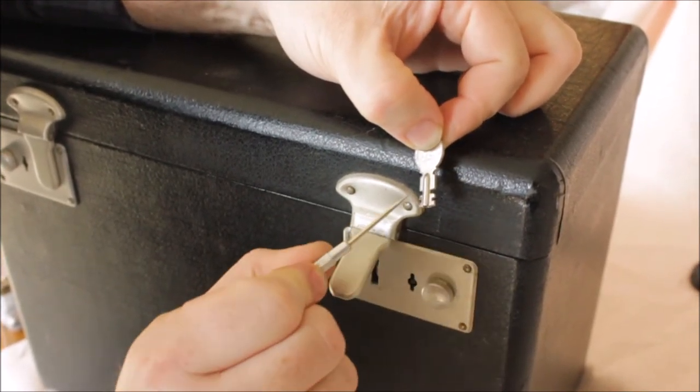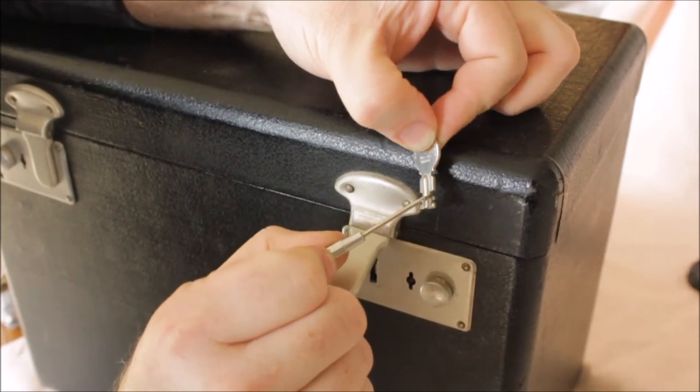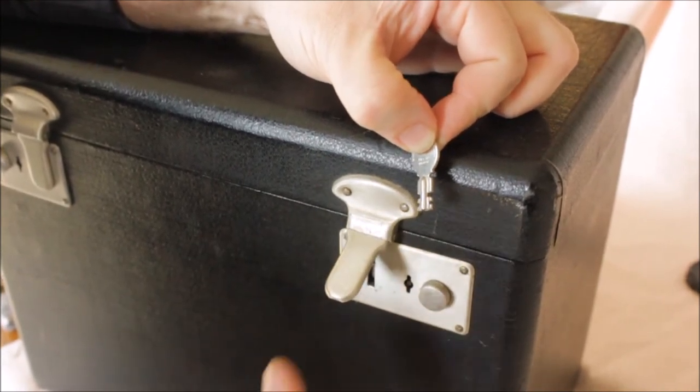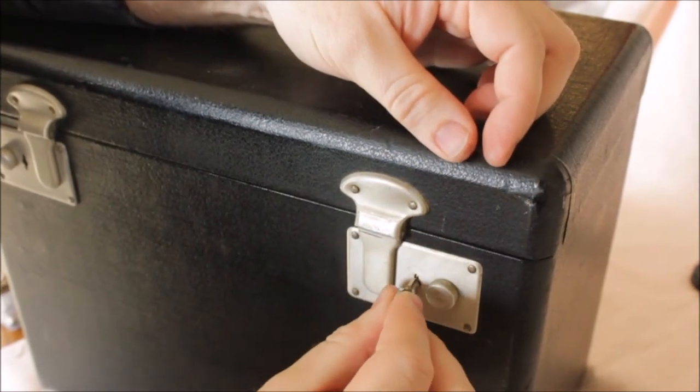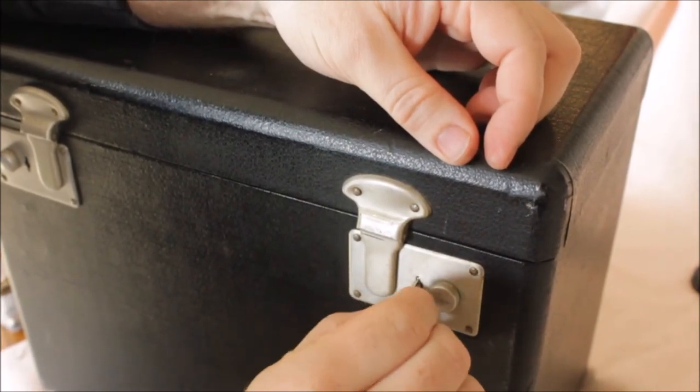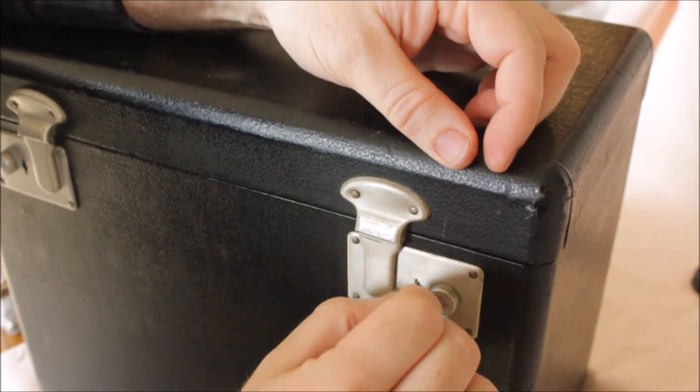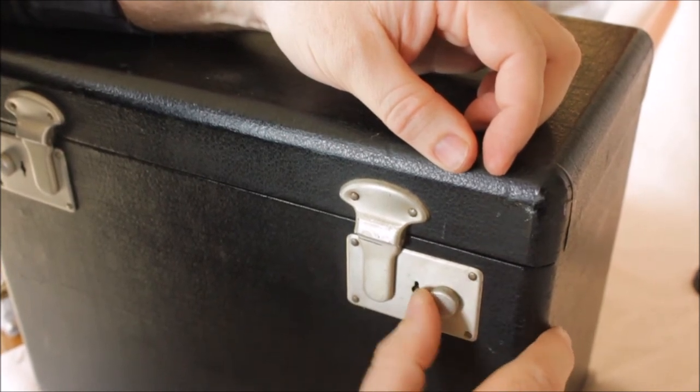The key is inserted to this point right here, just to the second notch. So we lock the case, insert the key to the second notch, turn the key 180 degrees counterclockwise, the case is now locked.